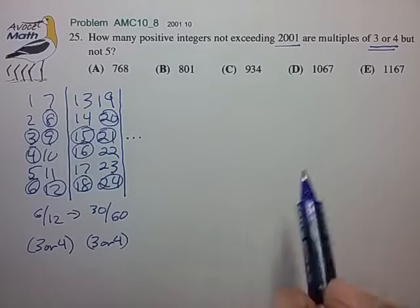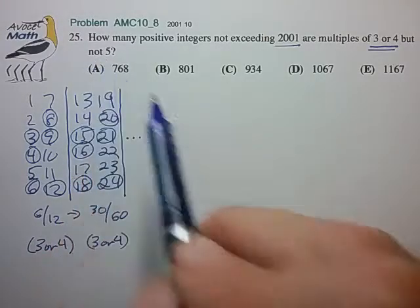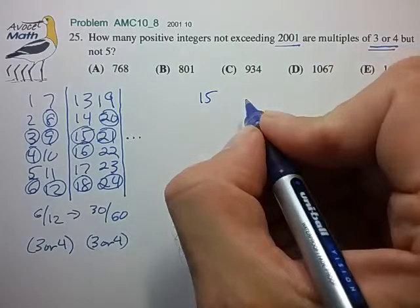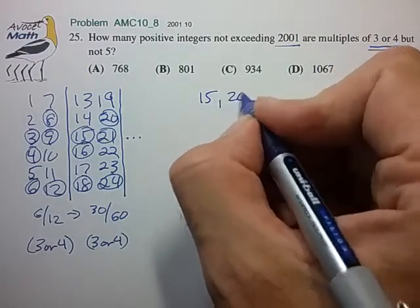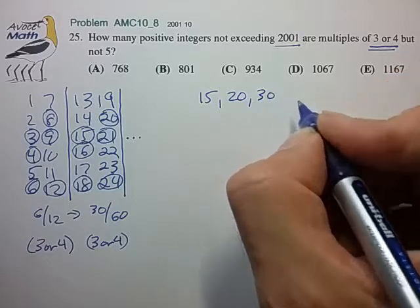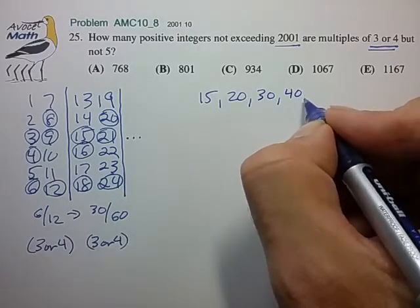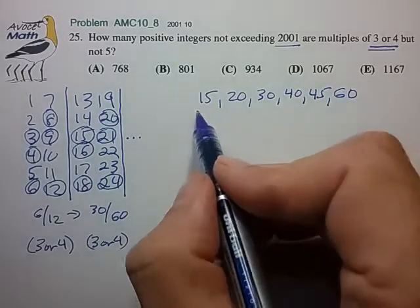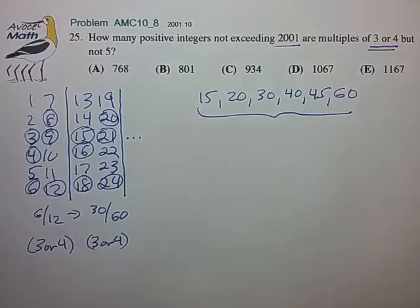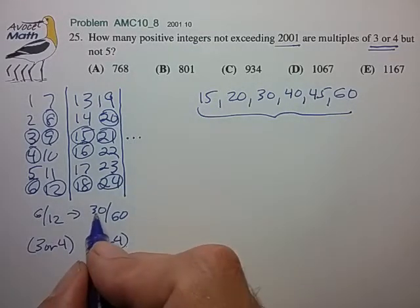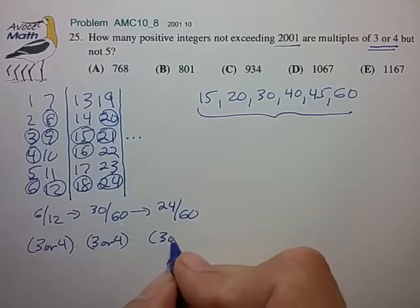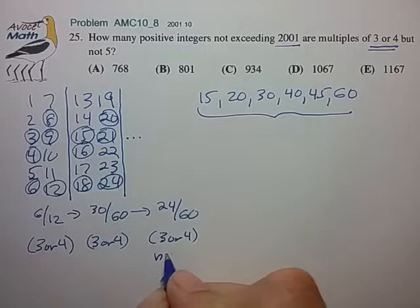So now comes the problem of trying to eliminate the numbers that are multiples of 5. If we look at this block of 60 numbers now, we would have to eliminate the number 15. The next number to eliminate would be 20, and then 30 would have to be eliminated. 40, and 45, and lastly 60. So it looks like we have 6 numbers here that we would have to eliminate out of a block of 60, and that would reduce this 30 out of 60 numbers to 24 out of 60 numbers that are 3 or 4, but not 5.